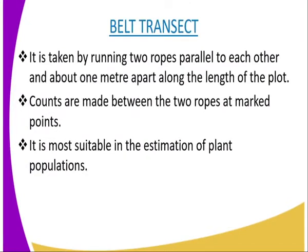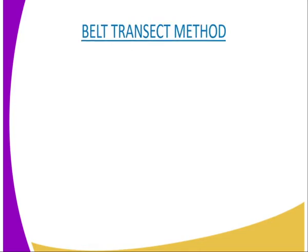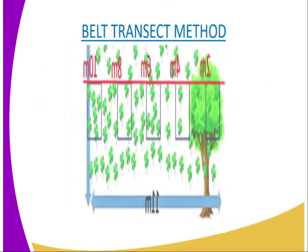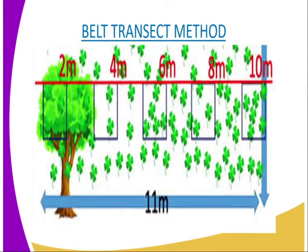Our second population estimation method is the belt transect. In the belt transect, it is taken by running two ropes parallel to each other and about one meter apart along the length of a plot. We can have a diagrammatic representation of the same so that you will be able to understand what we are saying.